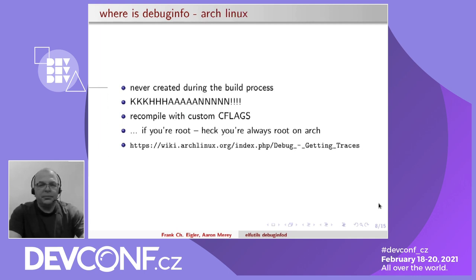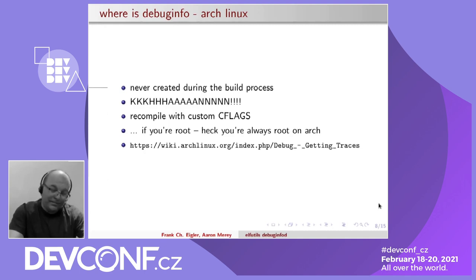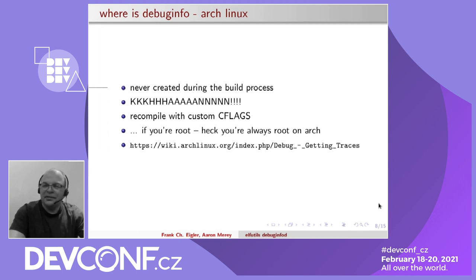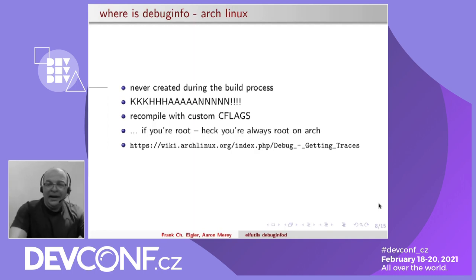On Arch Linux, which is always an inspiration for the do-it-yourselfer, they build without the -g flag completely. So this information just isn't generated in the first place. Debugging will be challenging. Their official documentation advice is just to recompile what you need to debug with -g and then off you go. Those hardy Arch people — I love them.